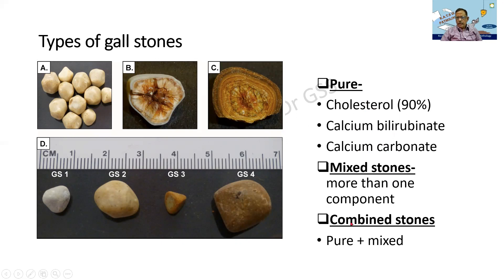What is a combined stone? A combined stone is one which is made up of a nidus and a shell. Nidus means the central core and the shell. A mixed stone can be the shell and a pure stone can be the nidus, or vice versa. When it is present like this, it is called a combined stone — so there is a pure as well as a mixed component present. Please write: pure stones, mixed stones, and combined stones — cholesterol, calcium bilirubinate, and calcium carbonate.